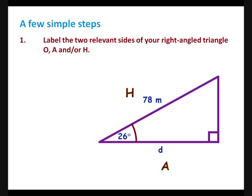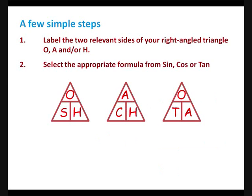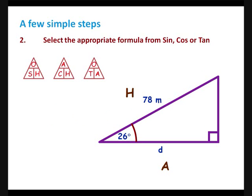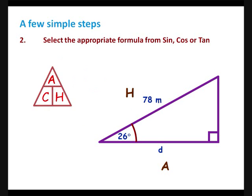In this triangle, we have 78 metres, which is the hypotenuse, and D, which is the adjacent. Step 2: select the appropriate formula from sine, cos, or tan. We have the adjacent and hypotenuse already, so we need cos.